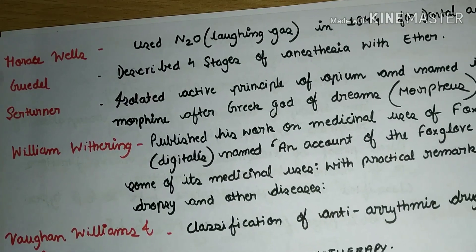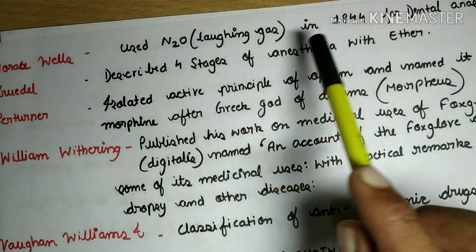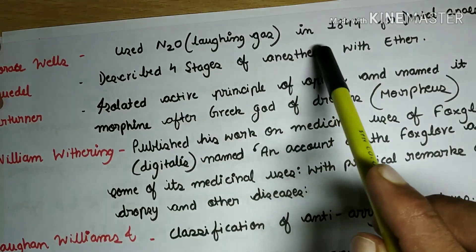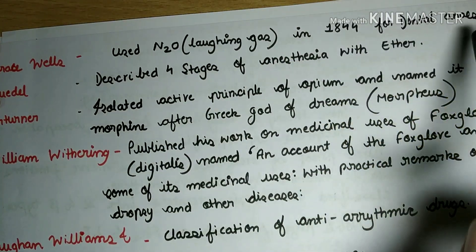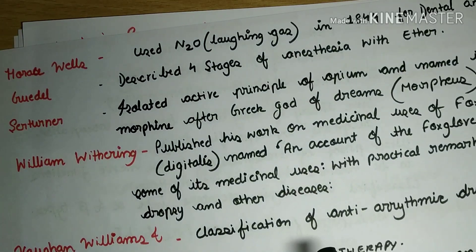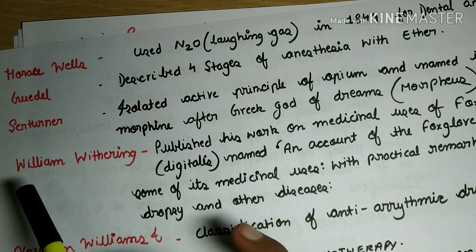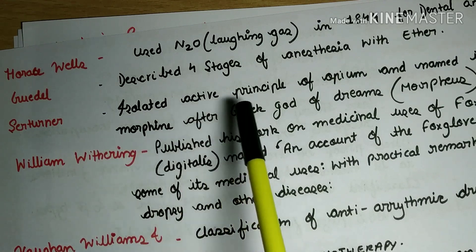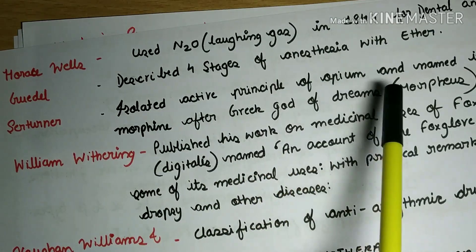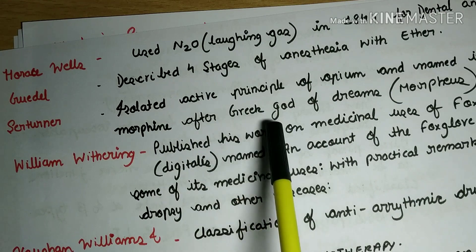Horace Wells used nitrous oxide, also known as laughing gas, in 1844 for dental anesthesia. Guedel described the four stages of anesthesia with ether. Serturner isolated the active principle of opium and named it morphine, after the Greek god of dreams, Morpheus.